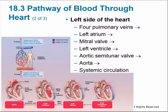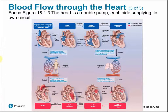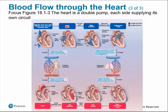After blood leaves the tissues, it heads back toward the heart through the superior and inferior vena cava into the right atrium, and the cycle begins again, starting with the pulmonary circuit.